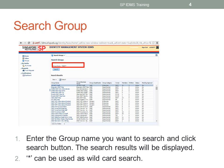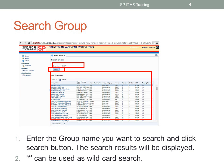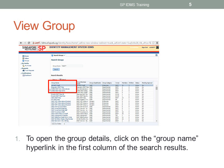Enter the group name you want to search and click the search button. Search results will be displayed. Please take note: an asterisk can be used as a wildcard search. To open the group details, click on the group name hyperlink in the first column of the search result.